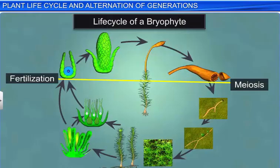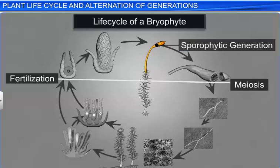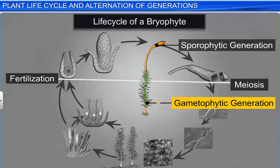In bryophytes, for instance, a free-living, thaloid, photosynthetic, and erect haploid gametophyte represents the dominant phase. On the other hand, the sporophytic generation is short-lived, during which the multicellular sporophyte is totally or partially dependent on the gametophyte for its anchorage and nutrition.